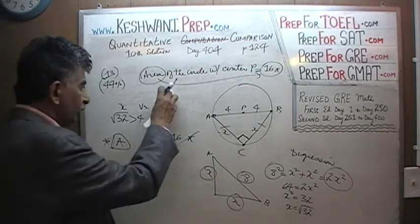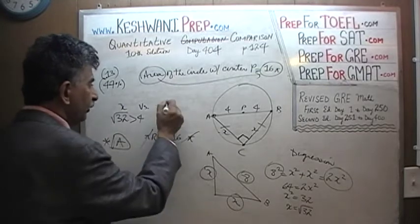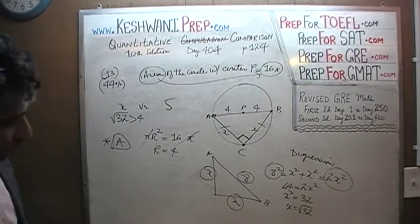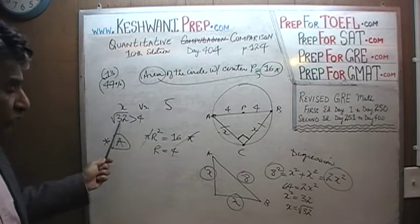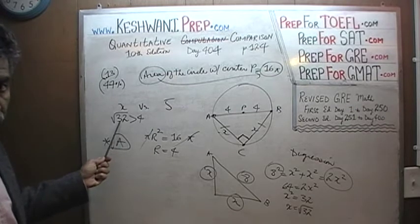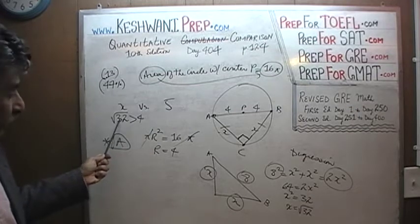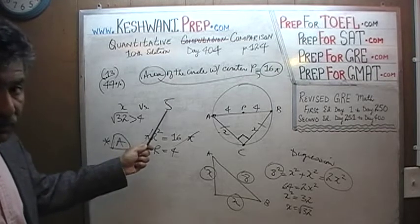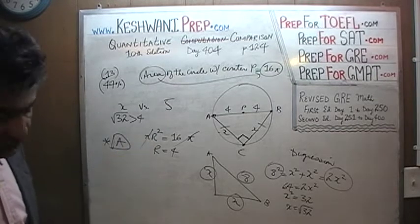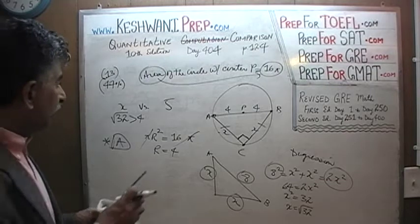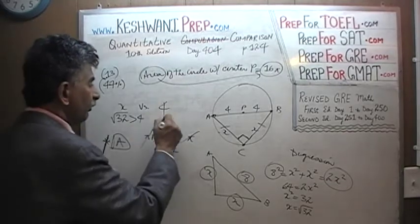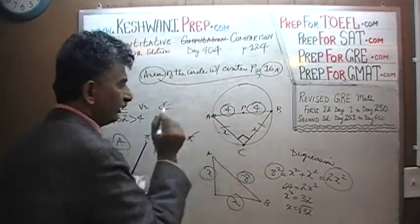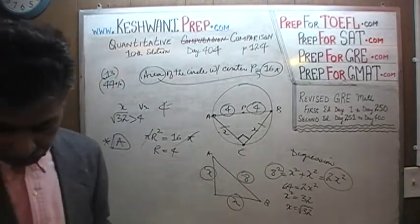What the square root of 32 actually is doesn't matter. Even if they had put 5 in the second column instead of 4, the answer still would have been A, because the square root of 25 is 5, so the square root of 32 is more than 5. If they had put 6, the story would change. They put 4 because they want you to make a connection between the 4 in the answer and the 4 that is the radius — they're trying to confuse you.